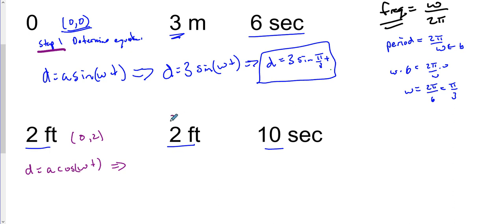Next thing is we have our amplitude. Amplitude is our a value, absolute value of a. In this case, just our a value. So we have D = 2 cos(ωt). Let's keep moving on.